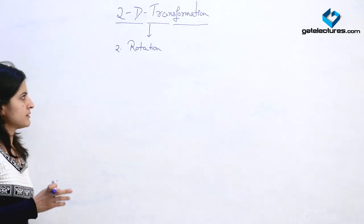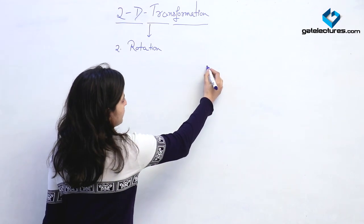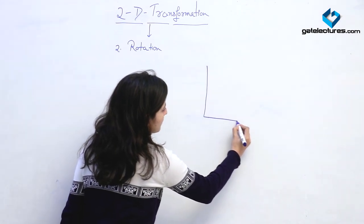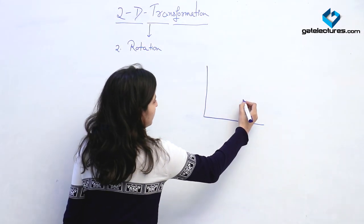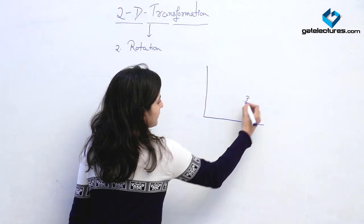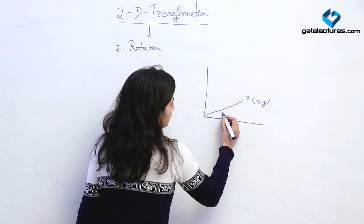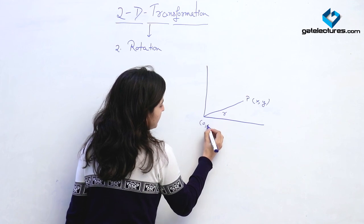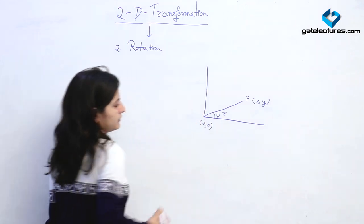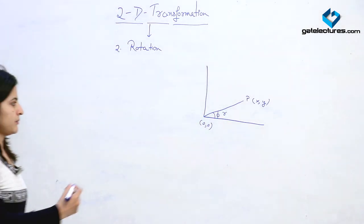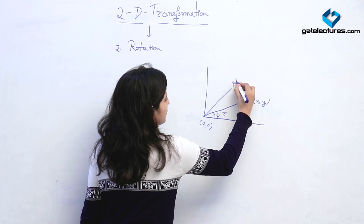The second 2D transformation is rotation, in which we rotate an object about its origin with some angular specification. Suppose we have a point P with coordinate (x, y), which is at a distance r from the origin with angle phi. Suppose we rotate this by angle theta and move to the position P dash.